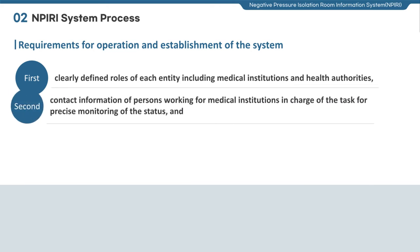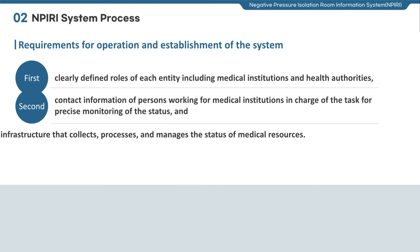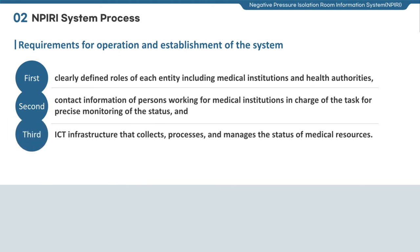Second, there should be contact information of persons in charge of reporting the status in hospitals for precise monitoring. This is particularly important to check and determine the consistency and accuracy of data submitted by hospitals. Third, the ICT infrastructure to collect, process, and manage the status of medical resources should be built in advance.